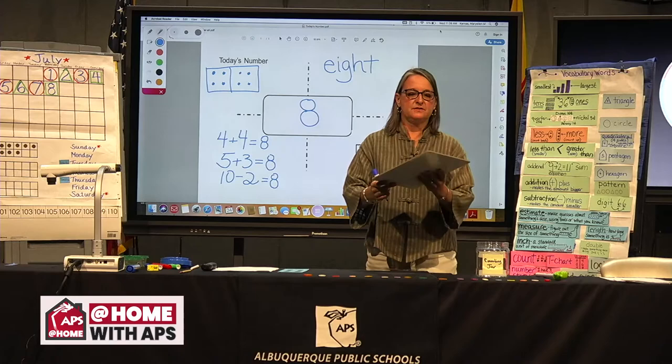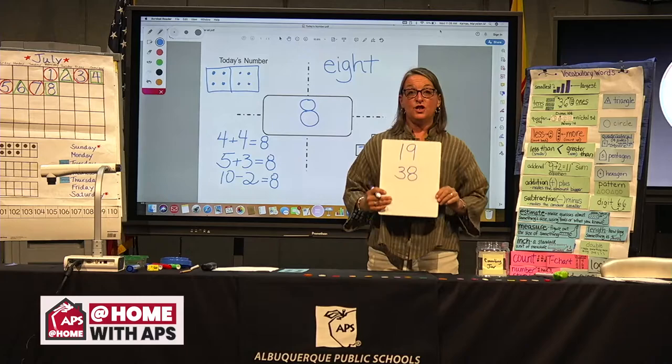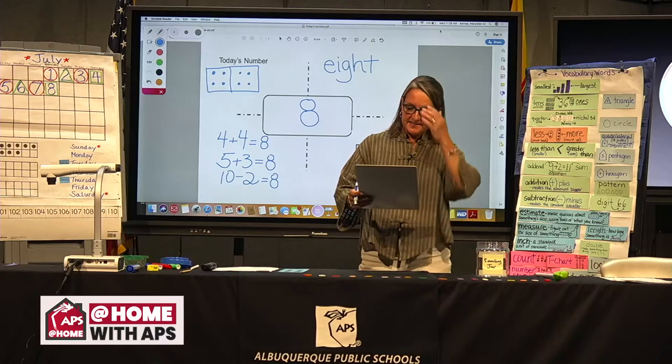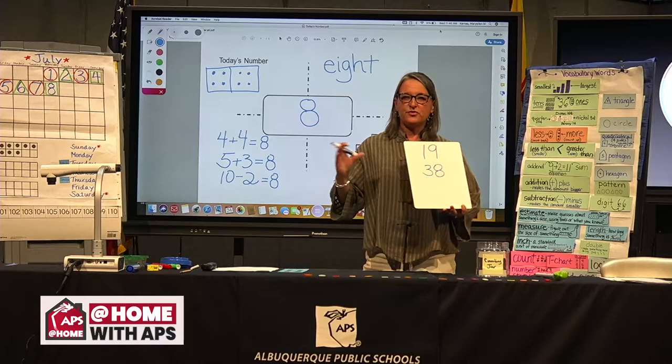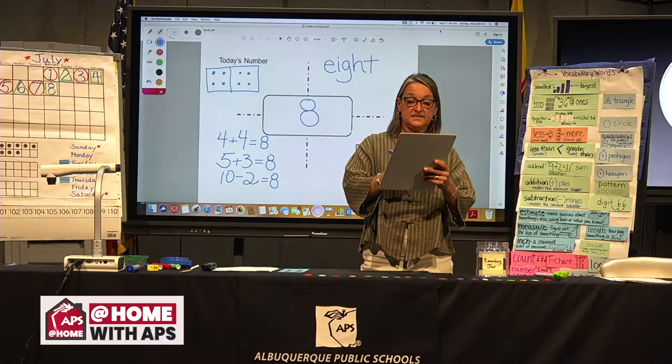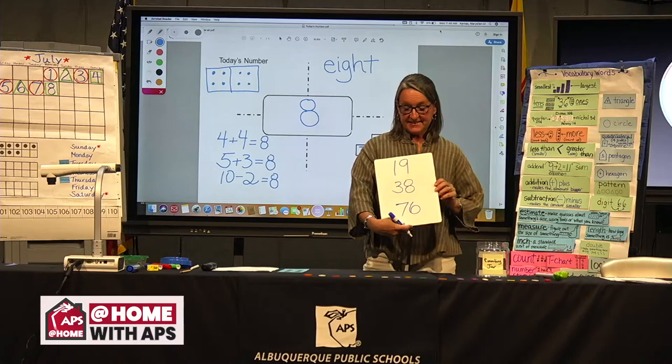If you are a second grader, you're going to double that 38. Think about 30 plus 30 — that's 60. Then eight plus eight is 16. Put 60 and 16 together and you get 76. So 76 things if you're in second grade. This is your counting jar assignment for today.